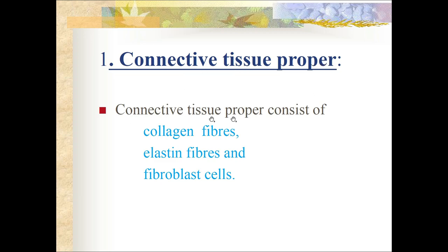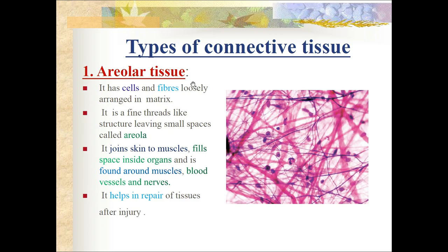Connective tissue proper consists of collagen fibers, elastin fibers, and fibroblast cells. Areolar tissue has cells and fibers loosely arranged. It is a fine thread-like structure leaving small spaces called areolae. It joins the skin to the muscle and fills spaces inside organs. It is found around muscles, blood vessels, and nerves, and helps in repair of tissue after injury.